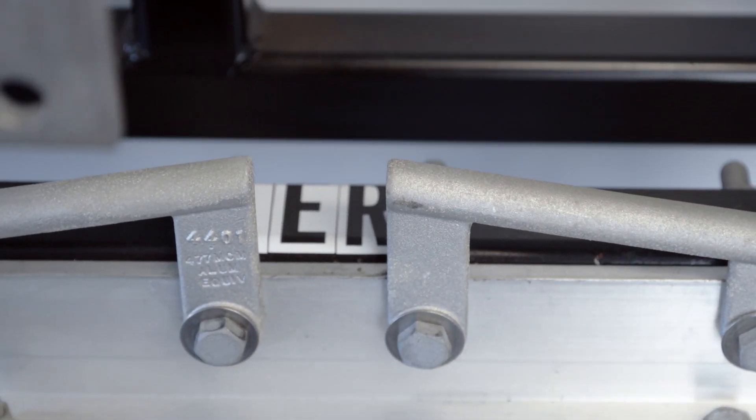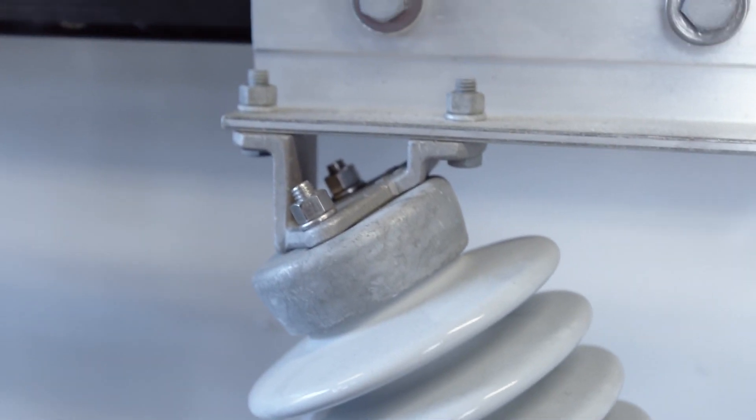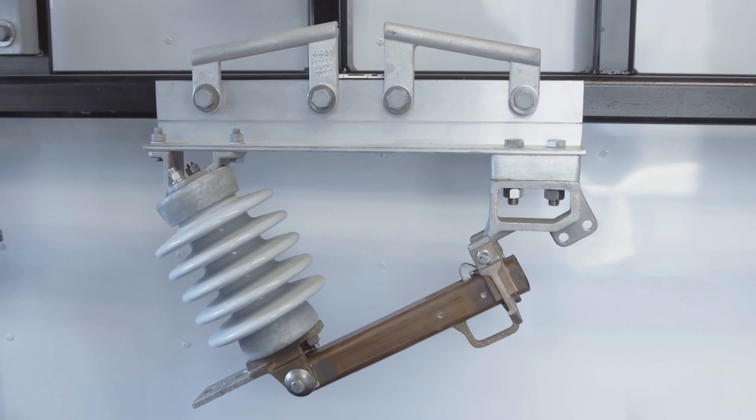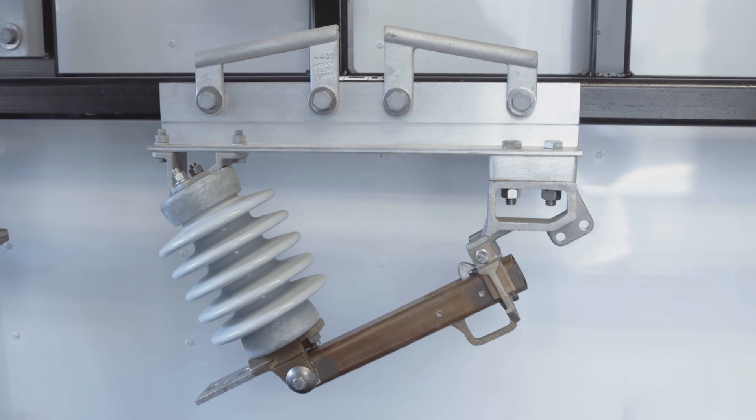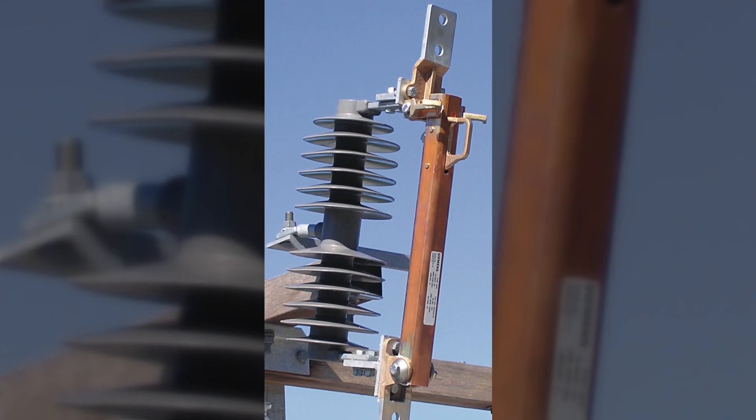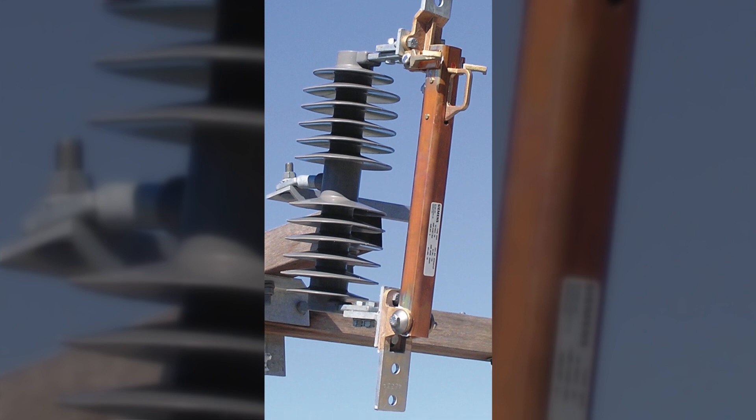Line tap disconnects offer wedge hangers, a universal base and customized drill patterns for utilities that standardize on one type of connector. Single insulator disconnects are available with a cross arm mounting bracket.